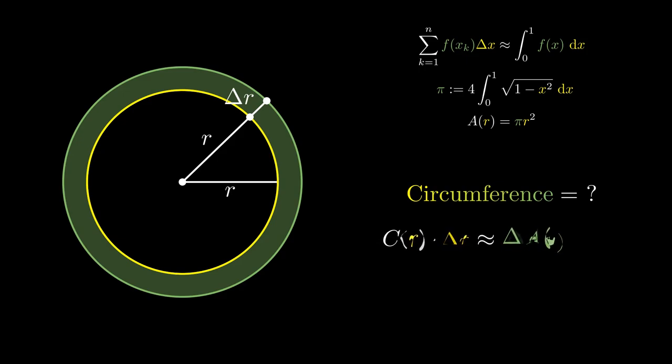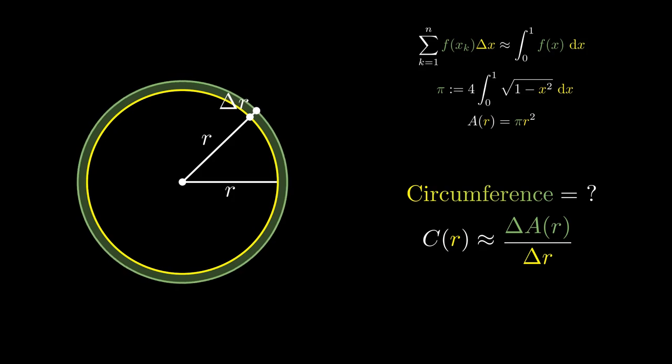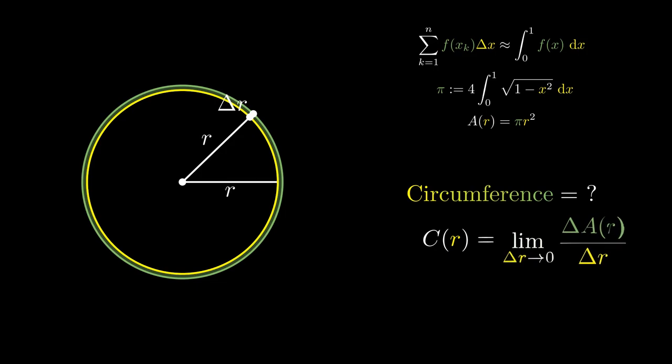We can divide out Δr on both sides and let Δr approach 0 in the limit. As we do that, the region starts to approximate the actual circumference. But this is nothing more than the derivative of the area with respect to r.